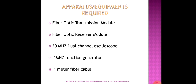We will now see what equipment or apparatus is required to do the experiment: a fiber optic transmission module, a fiber optic receiver module, at least a 20 megahertz dual channel oscilloscope, a signal generator or function generator of 1 megahertz, and at least 1 meter of fiber cable.